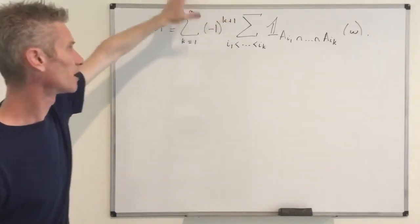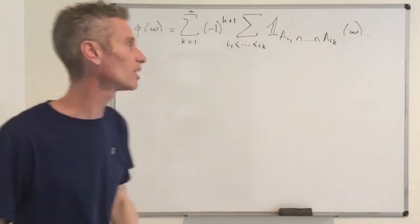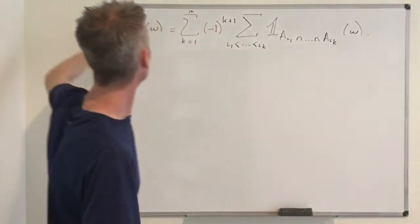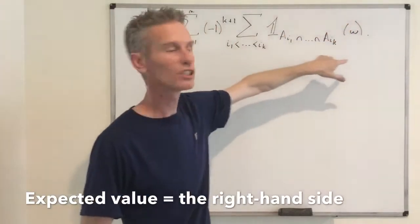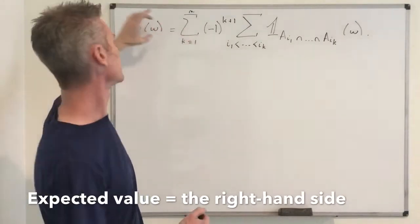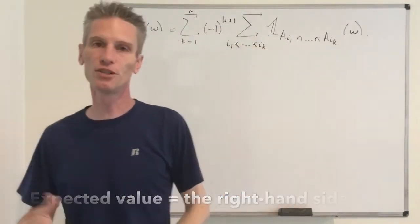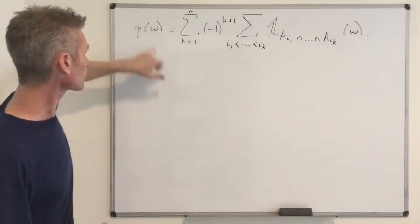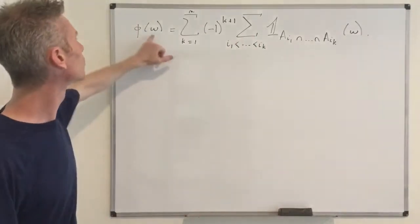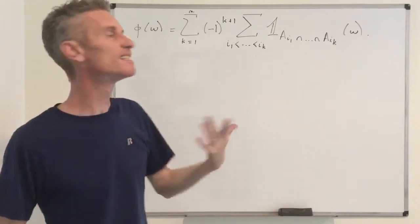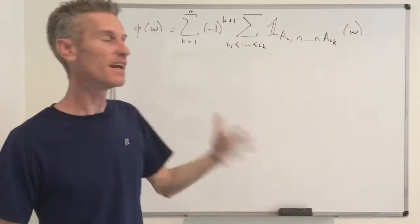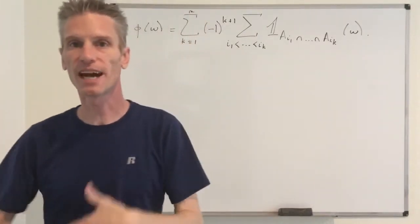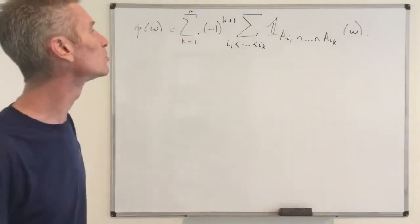The reason for introducing this function is that by linearity, the expected value of φ equals the sum of (−1)^(k−1) times the sum of the expected values of those indicator functions. Since the expected value of an indicator function is just the probability of the corresponding event, taking the expected value of φ recovers exactly the right-hand side of the inclusion-exclusion identity. So the only thing left to prove is that φ(ω) equals either zero or one.